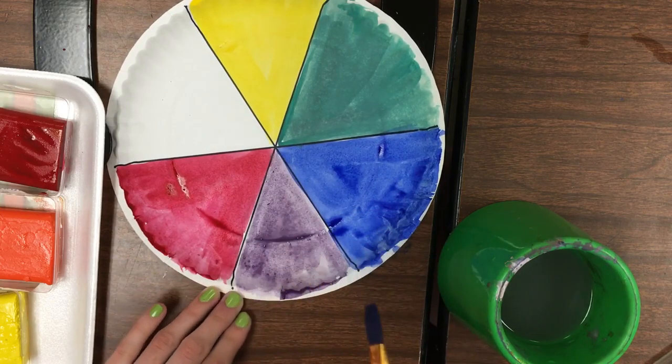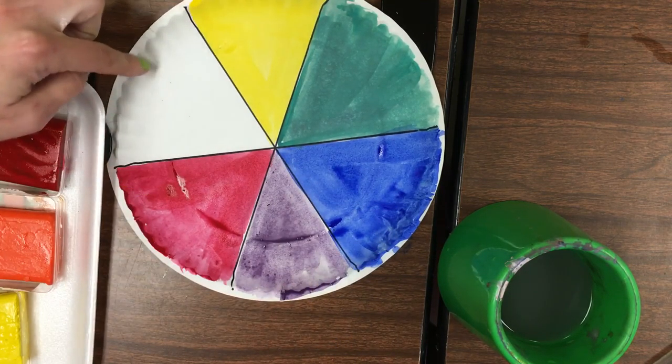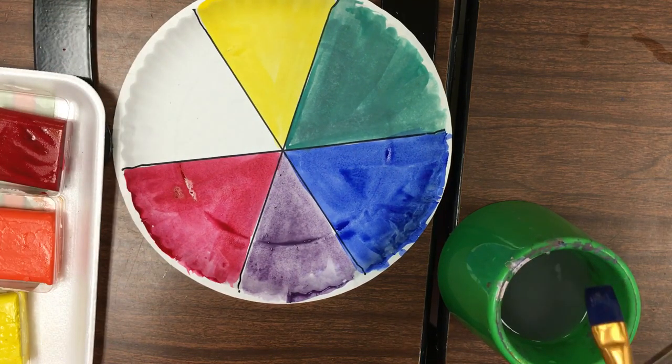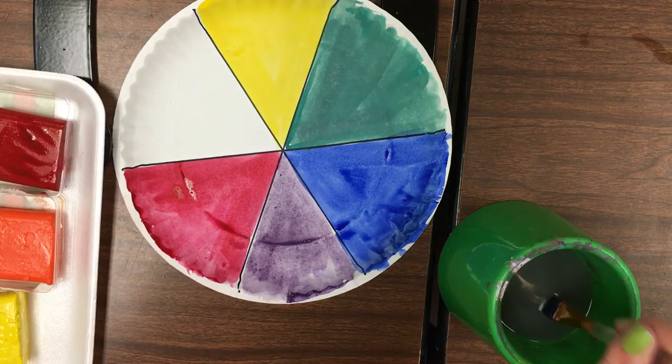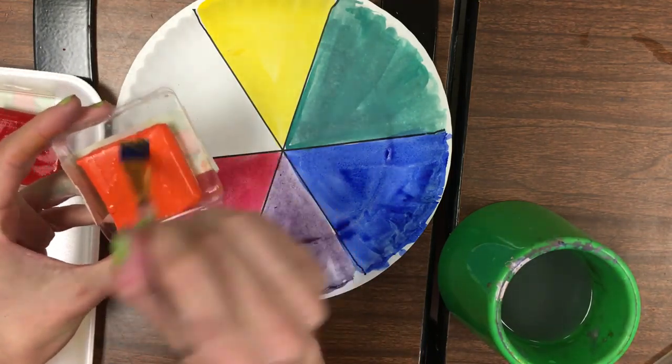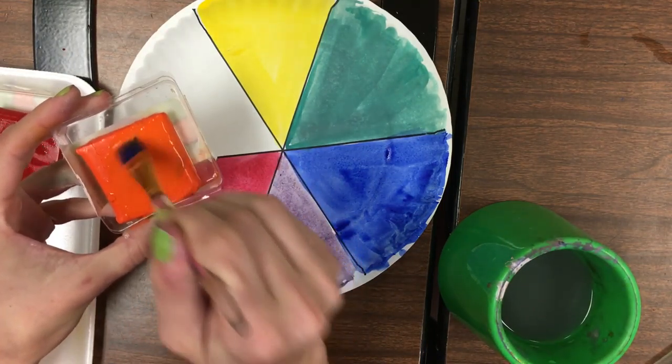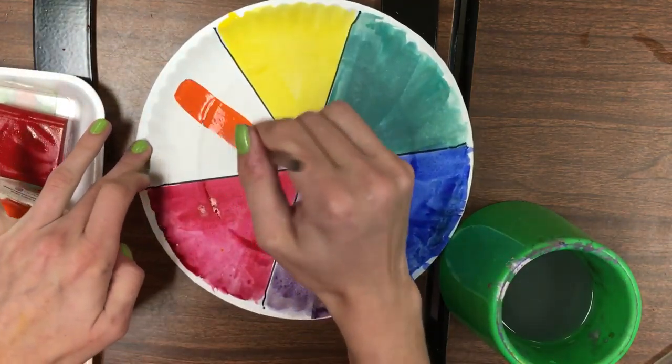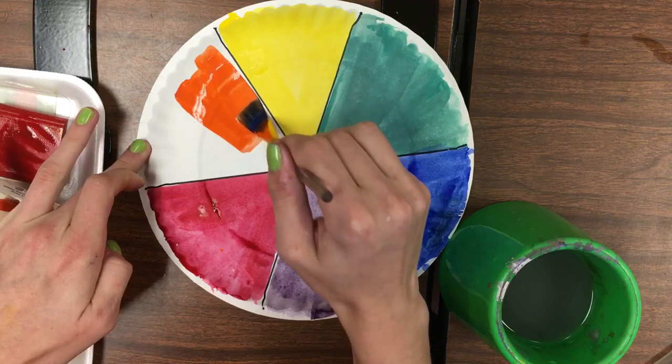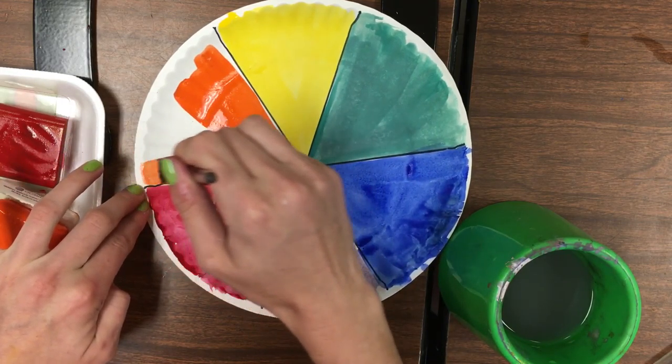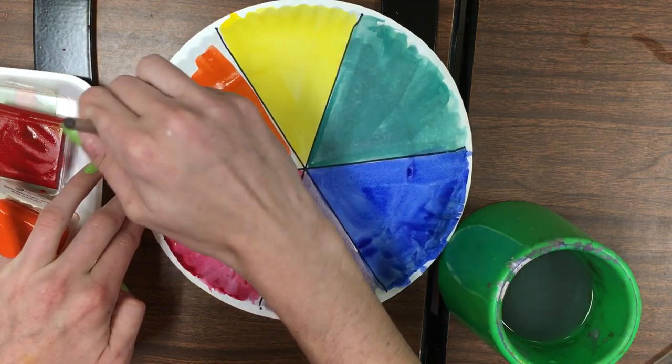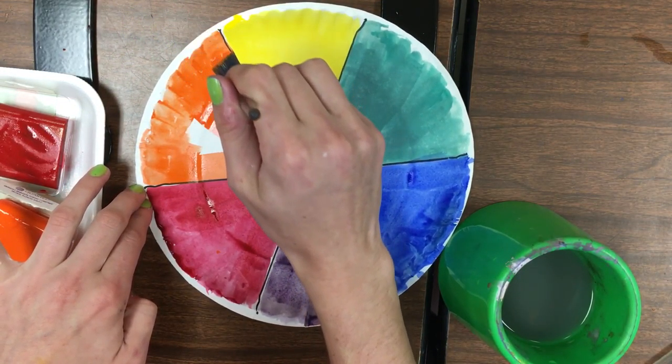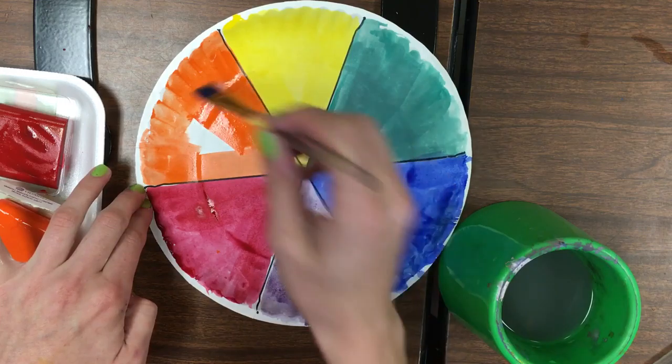Last but not least, I take my two neighbors of yellow and red. Those two come together to give us orange. So take my orange, have some water on my brush, rub some orange off, and fill in this last triangle here. And then our color wheel balloons are complete.